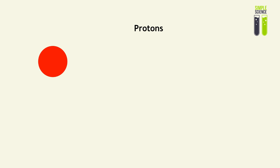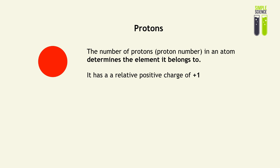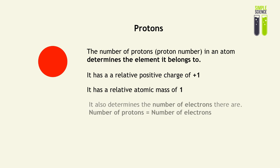So let's look at a proton. So protons are known in chemistry for determining the element in which an atom belongs to. And it has a relative positive charge within the nucleus of plus one. And it has a relative atomic mass of one. And it also determines the number of electrons there are inside the atom. Since an atom is neutrally charged, the number of electrons is equal to the number of protons.